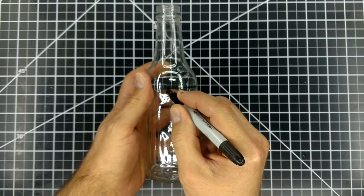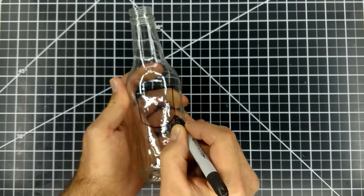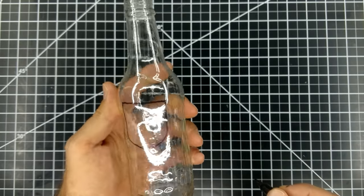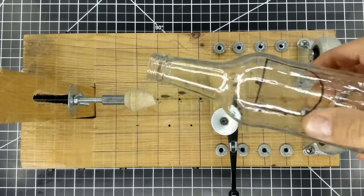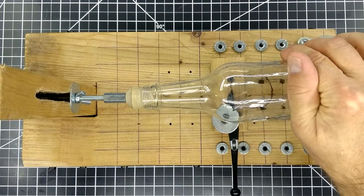I'm also going to discuss some things to take into consideration when you're planning your design. For example, when planning your shape it's helpful if part of it follows the curve of the bottle, because then you can use a bottle cutting jig to score the bottle easier.